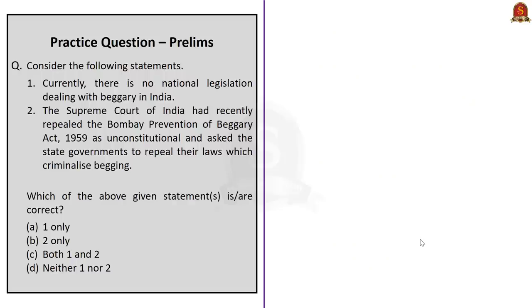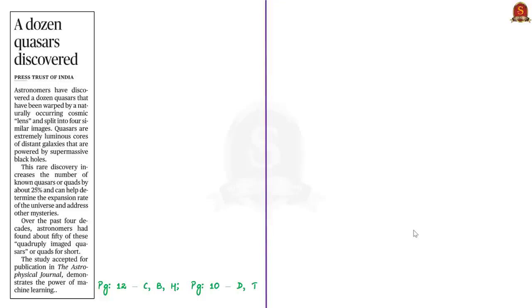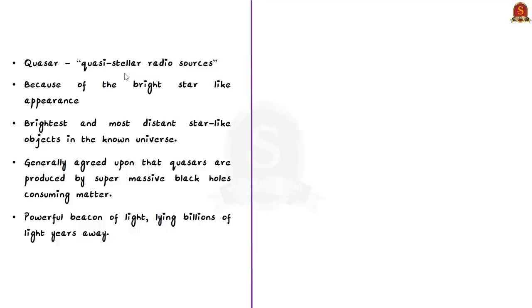With this we have come to the end of this news discussion. Look at this news article. The article talks about the new discovery of quasars. First let's understand about quasars. The term quasar derives from how these objects were originally discovered in the earliest radio surveys of the sky back in 1950s. They were dubbed quasi stellar radio sources because of the bright star like appearance and they were rechristened by 1964 to be quasar.